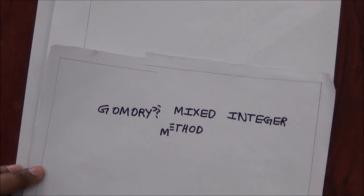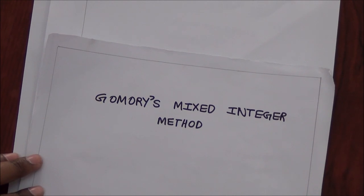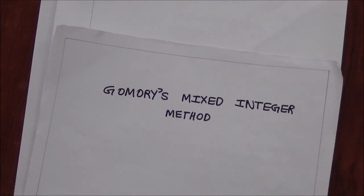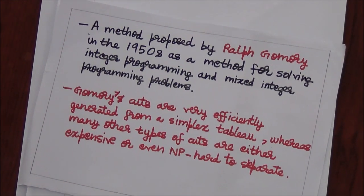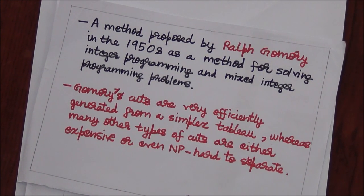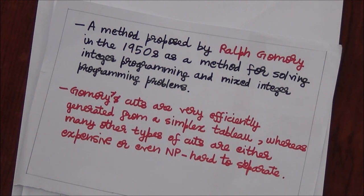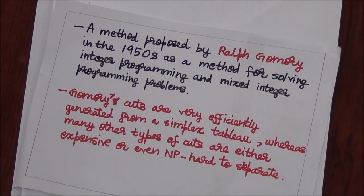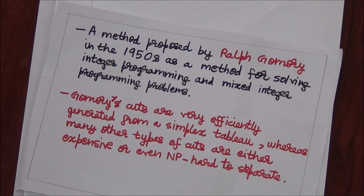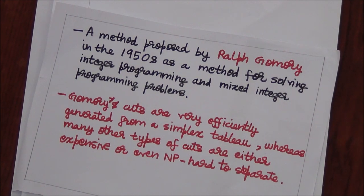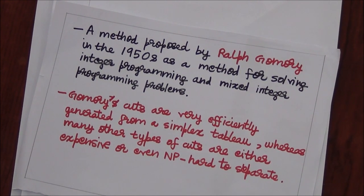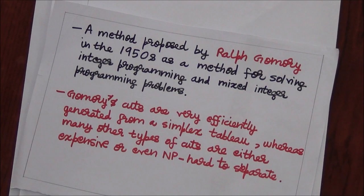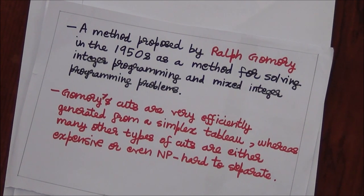Hi, today we are going to see about Gomory's mixed integer method. This method was proposed by Ralph Gomory. A cutting plane is an umbrella term for optimization methods which iteratively refine a feasible set or objective function by means of linear inequalities termed cuts. Gomory's cut is such a method.